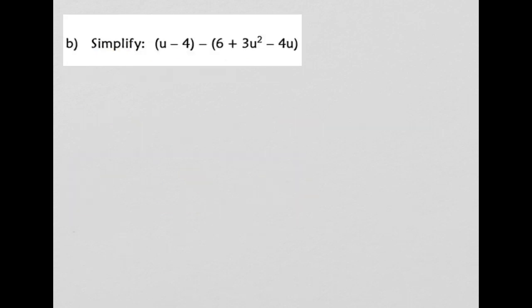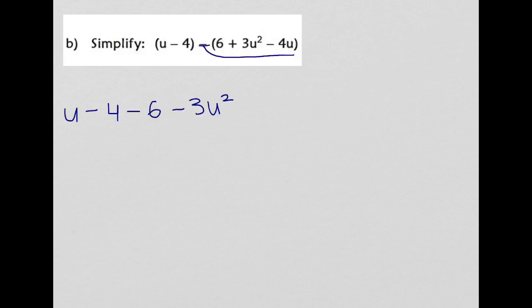In example number 2, they're asking us to simplify. So first, let's distribute the negative sign to all the factors here. When we distribute it, we will get u minus 4 minus 6 minus 3u squared plus 4u. Now we need to simplify this equation, so we're going to combine like terms. When we combine u and 4u, we will get 5u.